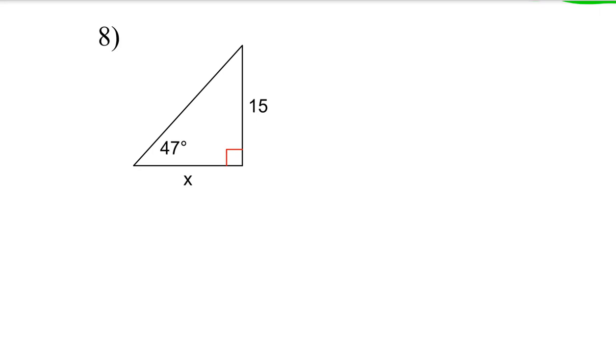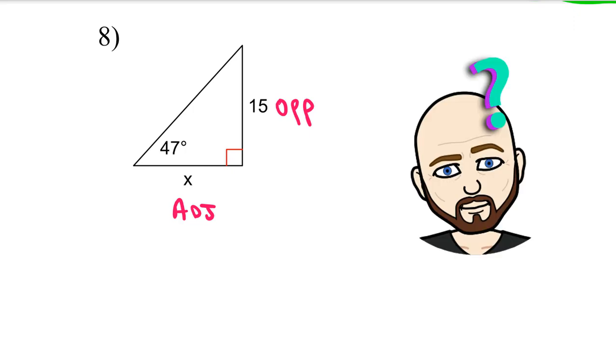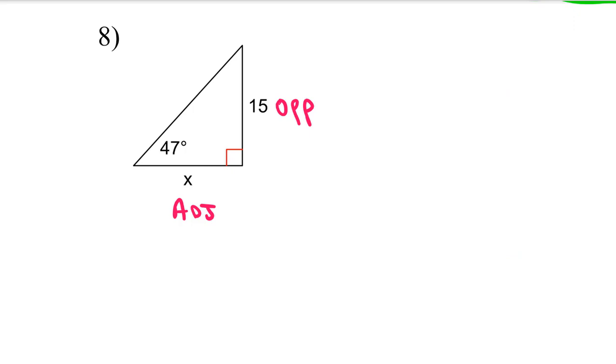Now across from the 47, this side over here is the opposite side. Where the x is located, that is the adjacent side. So I want to think to myself, what trig function from sine, cosine, and tangent function has to do with opposite and adjacent. And by golly, by George, that would be the tangent function.